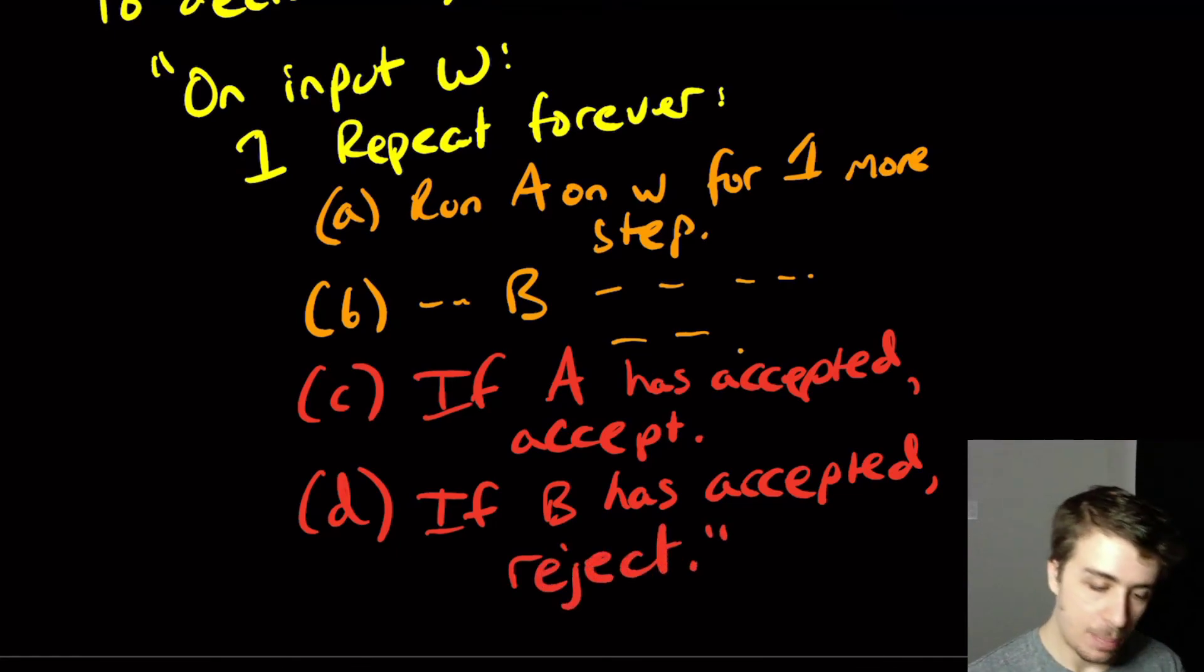And that's the whole machine. Because we know at least one of these two machines will hit one of these two steps at some point. Or theoretically, it could hit both. But at least one of these two will happen at some point because of the definition of what they are. They are recognizers.